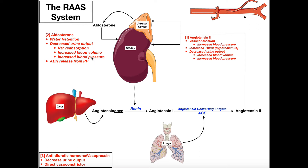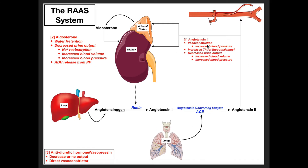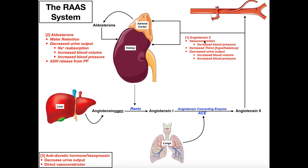Notice that aldosterone isn't doing anything directly with blood pressure — it's really just increasing blood volume, which therefore increases blood pressure. Angiotensin 2 does both: it decreases urine output and causes direct vasoconstriction, while aldosterone is really just dealing with water retention at the distal convoluted tubule. There is one other function of aldosterone: it further increases the levels of antidiuretic hormone, also called vasopressin, which is released from the posterior pituitary gland.